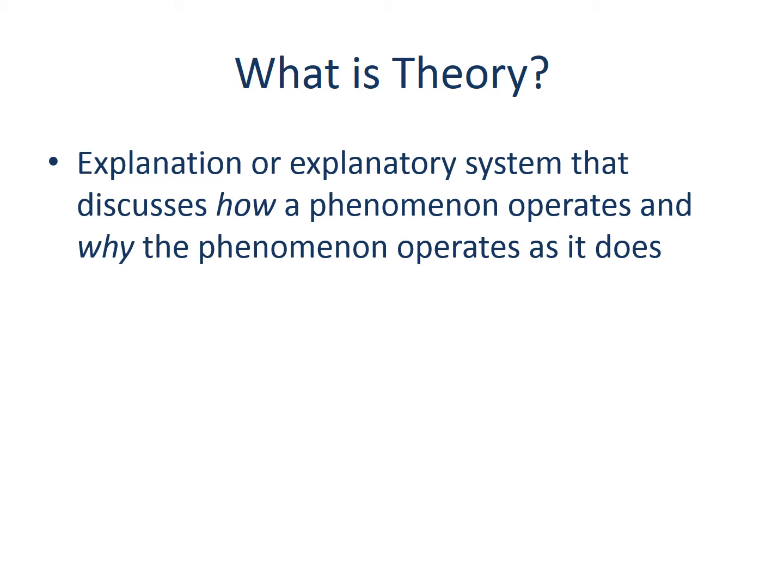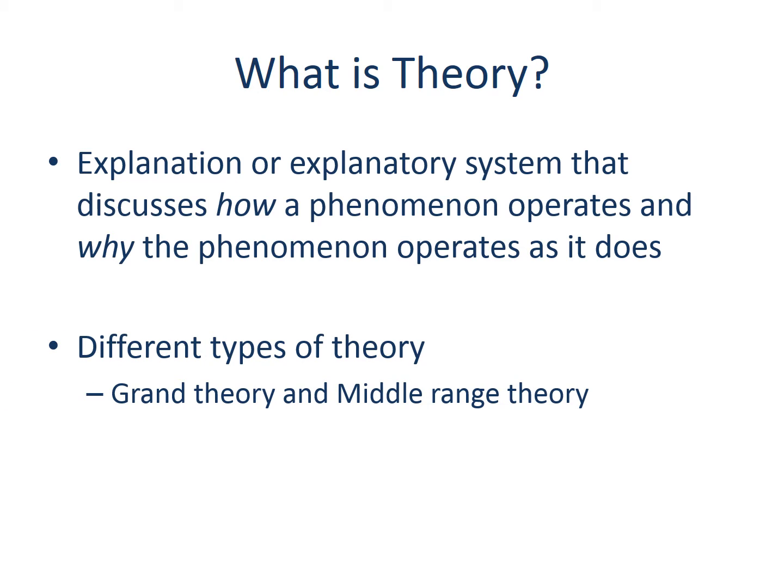Depending on the focus of a theory, we can classify theories into different types. Grand theory deals with the universal aspects of social processes or problems and is based on abstract ideas and concepts rather than on case-specific evidence. For example, conflict theory claims that society is in a state of perpetual conflict and competition for limited resources. This theory explains that schools train those in the working classes to accept their position as a lower-class member of society. If we apply this theory to explain why low-income minority students are not represented at four-year universities, the explanation will focus on the concept of social reproduction and the role of education in this process.